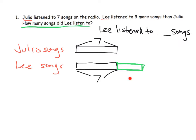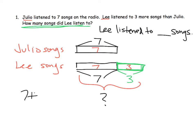It says Lee listened to three more songs than Julio, so this piece right here is a three. Now we can answer the question: how many songs did Lee listen to? We want to know this whole piece right here. You can write the numbers directly inside the tape — a seven, a seven, and a three — and then put the question mark out here for the total. So we know that seven plus three is 10, which means Lee listened to 10 songs. I kind of slowly walked through those eight steps — I may not have been totally perfect since I was doing them from memory, but you get the idea. Create that anchor chart for your eight steps to solving word problems and guide your students through each of those steps.